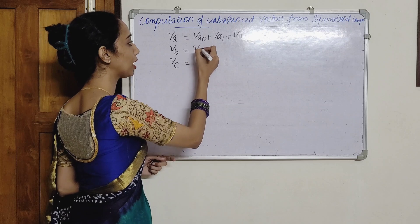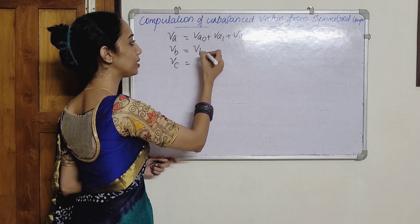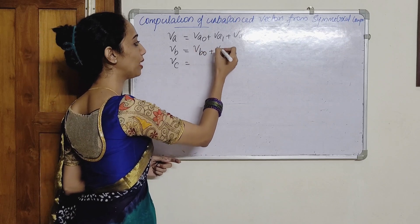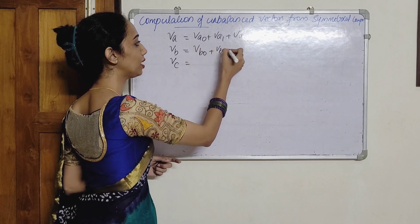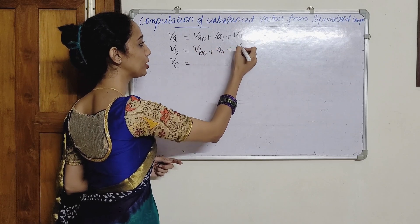VB is expressed here as VB0 plus VB1 plus VB2.